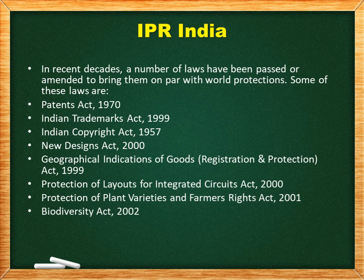Intellectual property in India is administered by the Office of the Controller General of Patents, Designs and Trademarks, a subordinate office of the Government of India. In recent decades, several laws have been passed or amended, including the Patent Act 1970, Indian Trademark Act 1999, Indian Copyright Act, new Design Act, Geographical Indication of Goods, Protection of Layout for Integrated Circuits Act 2000, Protection of Plant Varieties and Farmers' Rights Act 2001, and Biodiversity Act 2002.